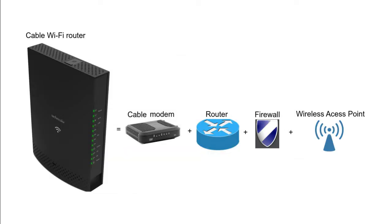Today, when you hear the term Wi-Fi router, it refers to a multifunctional device that includes a cable or DSL modem; a router, which is a device that enables data transfer between our local home or office network and the internet; a firewall, which provides basic protection of our local network from internet attacks; and a wireless access point. We can compare a wireless access point to a hub or network switch in an Ethernet cable network. Without it, our clients — like computers, smartphones, IP cameras, etc. — would not be able to connect to our local area network. In other words, there is no Wi-Fi network without an access point.